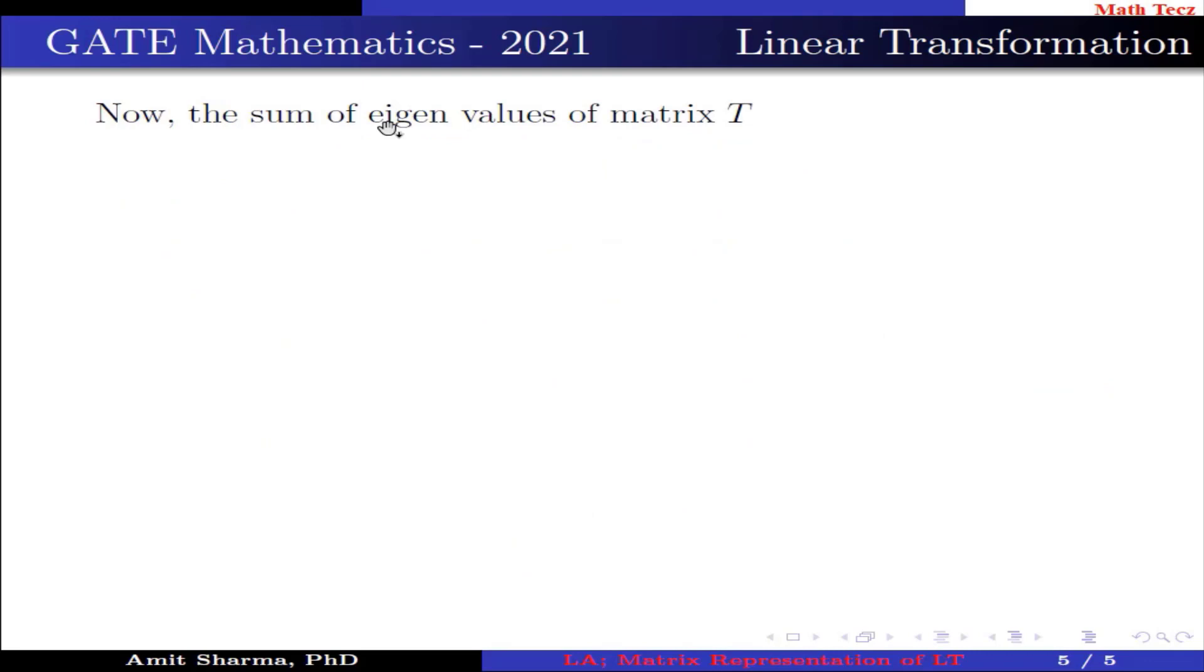Now the sum of eigenvalues of matrix T is equal to 0 + 1 + 0, which is the trace of matrix T, whose sum is 1. Hence, the sum of eigenvalues of matrix T is 1.